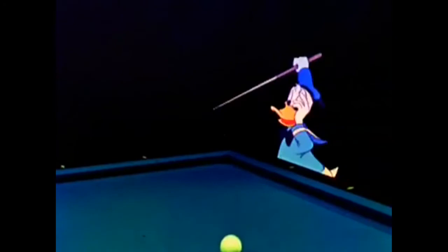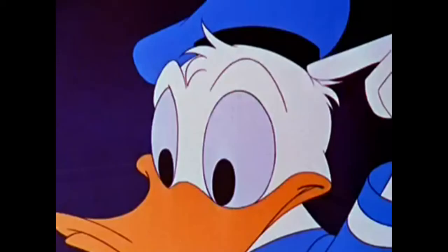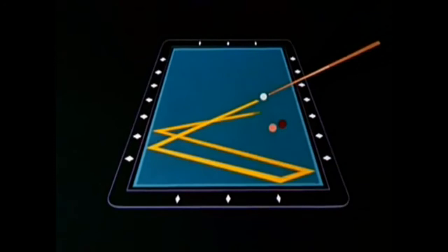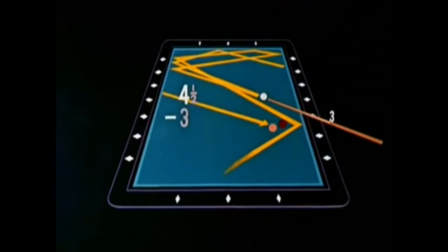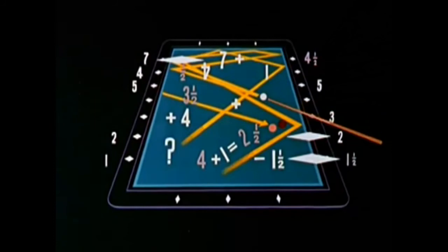There's nothing to it. Give it a try. Let's see now. If I shoot from here, it'll bounce there and go here. If I shoot from here. Four and a half minus three. Three and a half plus four added to two. I guess I should shoot about here.